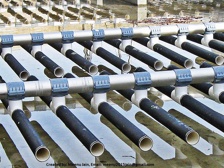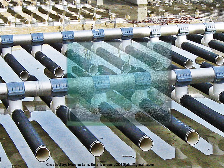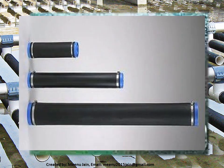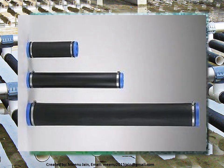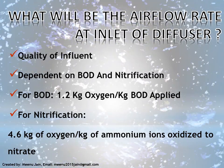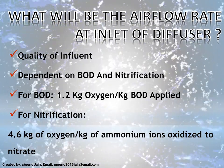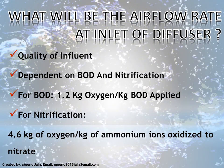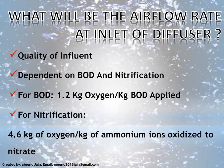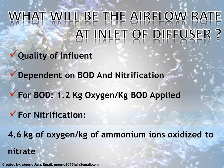This shows the tubular diffuser in an MBBR tank, with tube diffusers connected to pipes and headers. A zoomed view of one tube functioning is also shown, along with a zoomed image of the tube used in the complete air diffuser assembly. So far we have discussed the aeration system in the MBBR tank — but what will be the air flow rate at the inlet of the diffusers?